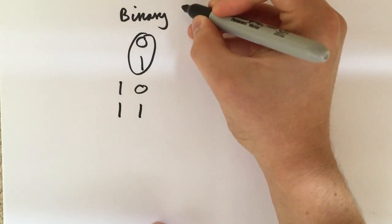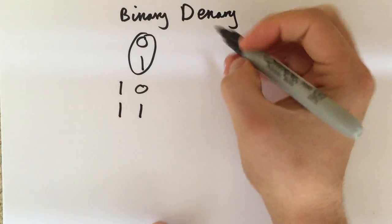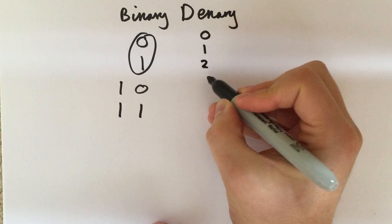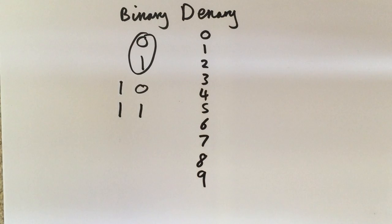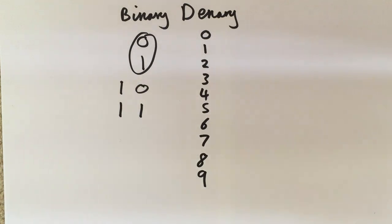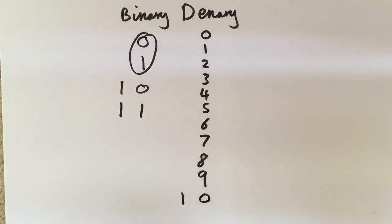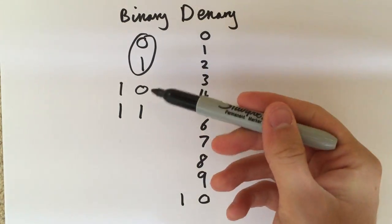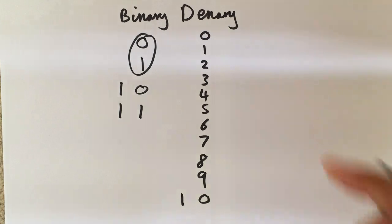Our number system — denary, though some people call it decimal — has more than that. We have zero, one, two, three, four, five, six, seven, eight, and nine — ten different digits in total, counting zero. If we've used all of those up, we move to the next column, so ten becomes the next biggest number. You can see a similar system working with binary. Now hexadecimal takes things a step further.